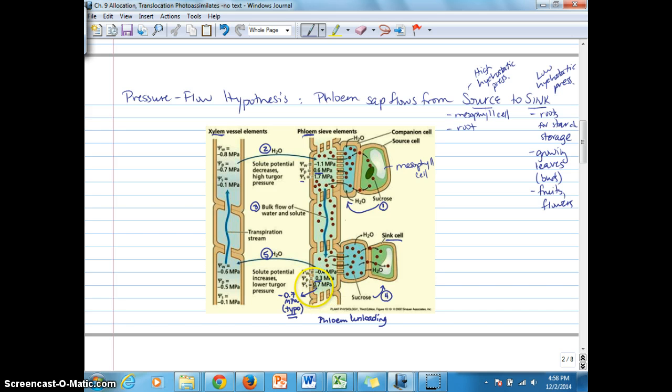This does say 0.7 as a positive number, which has to be a typo, so make sure you correct that to negative 0.7 because osmotic potential is always negative. The highest number osmotic potential can be is zero, which is the osmotic potential of pure water, so this has to be a negative number, and that makes our addition correct here for water potential.